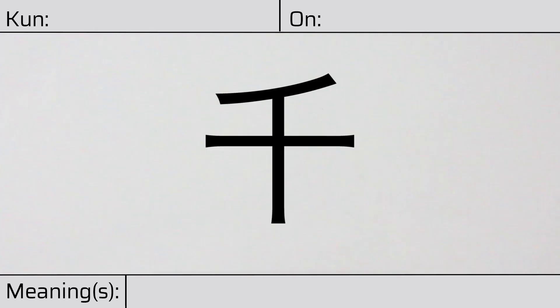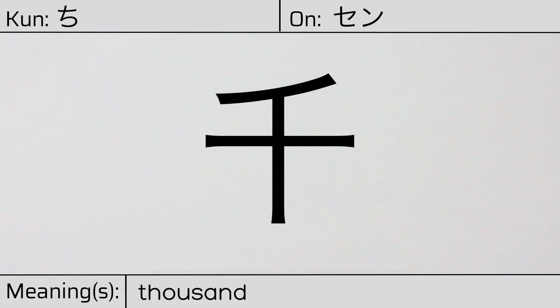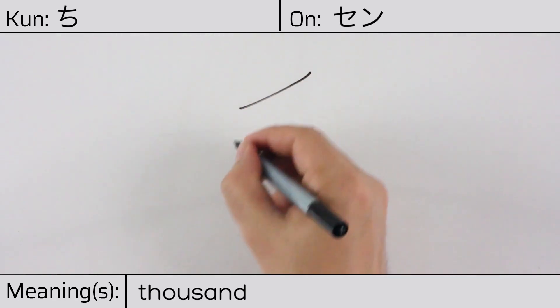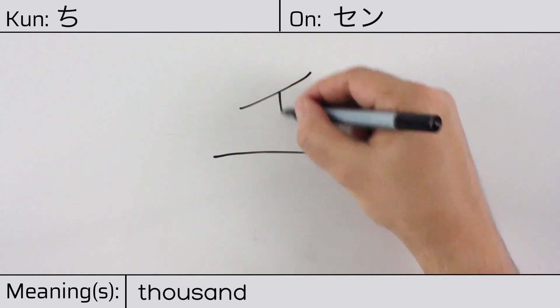Welcome to this lesson on Japanese kanji. Today, we'll be discussing this character. This kanji has a kunyomi or Japanese reading of chi, and it has an onyomi or Chinese reading of sen. This character has the meaning thousand. Here is the stroke order.